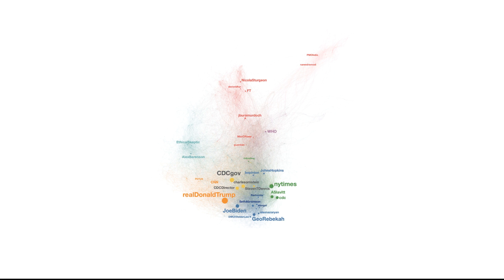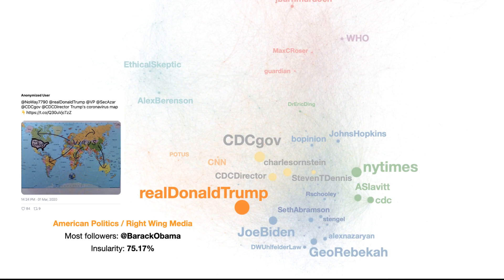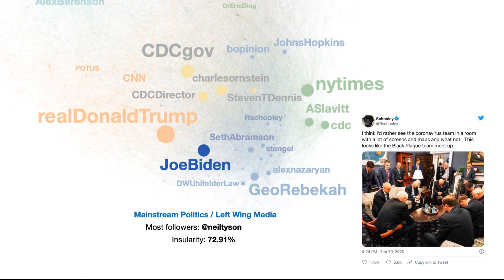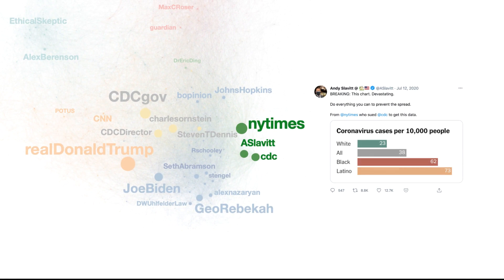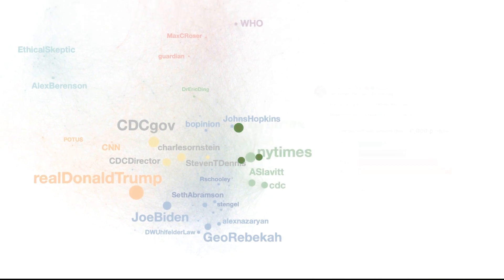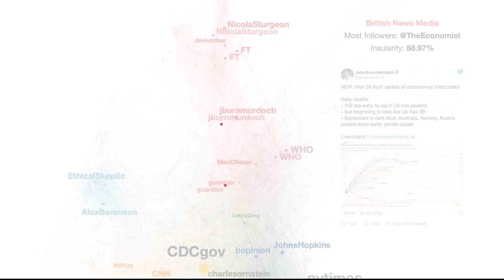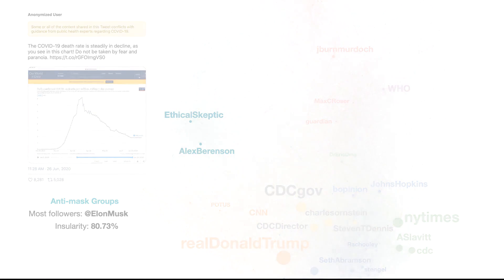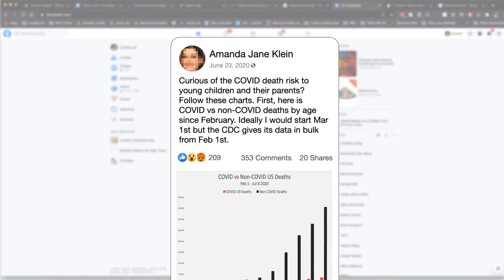As we followed these different communities, we began to slowly discern different modes of interpreting data. In our ethnographic study of anti-maskers, we show how their discussions exemplify a fundamental epistemological rift about how knowledge about the pandemic should be made, interpreted, and shared. While previous literature has emphasized the need for data and media literacy to combat misinformation, this study finds that anti-mask groups practice a form of data literacy in spades. Indeed, these groups often use orthodox scientific methods to make unorthodox arguments.